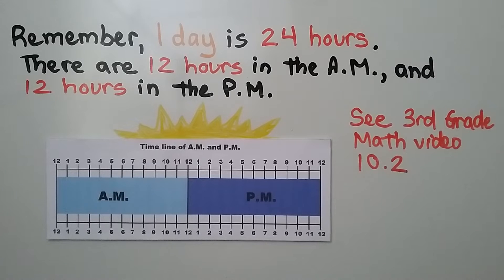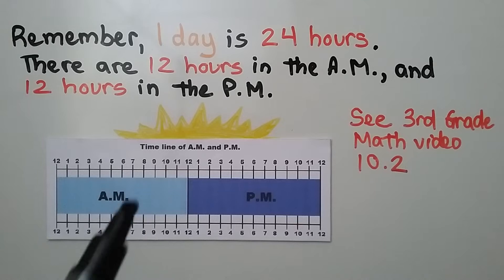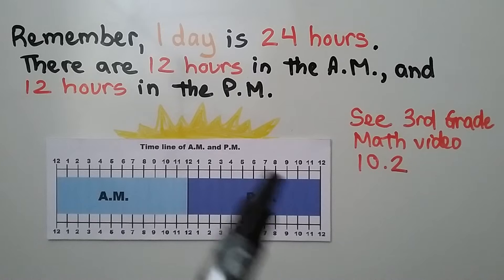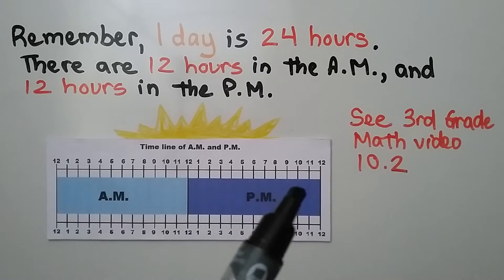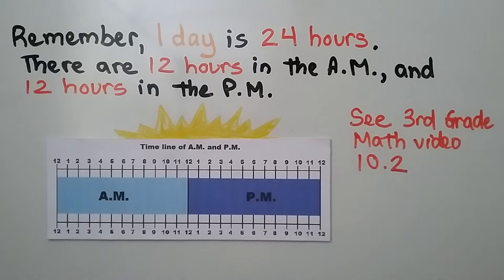Remember, one day is 24 hours. There are 12 hours in the a.m. — the morning — and 12 hours in the p.m., that's after 12 noon and before 12 midnight. This is when the daylight would be, just before lunch and after lunch. There'll be a link to third grade math video 10.2 where we explain that more if you need it.